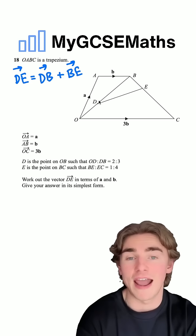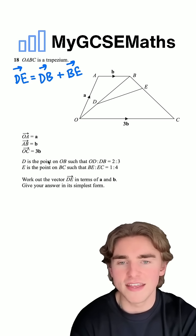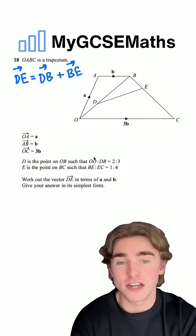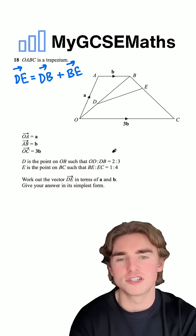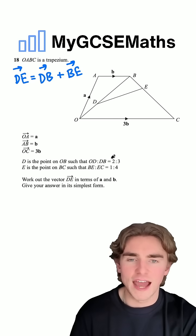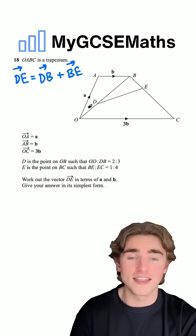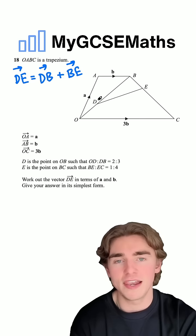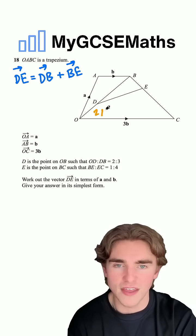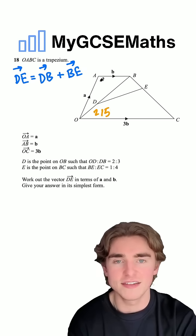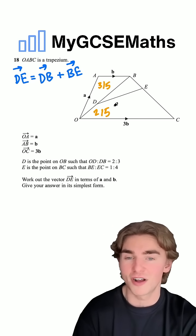Now we need to think about how we can work out DB and BE. We know that D is the point on OB such that the ratio of OD to DB is 2 to 3. How many parts does that ratio have in total? Five. How many of those go to OD? Two. So essentially, OD is two-fifths of the overall line, and that leaves three-fifths for DB.